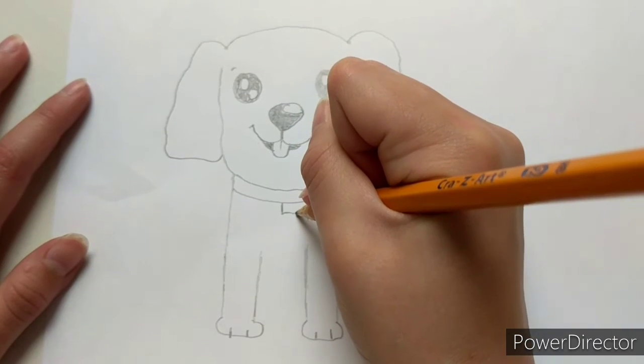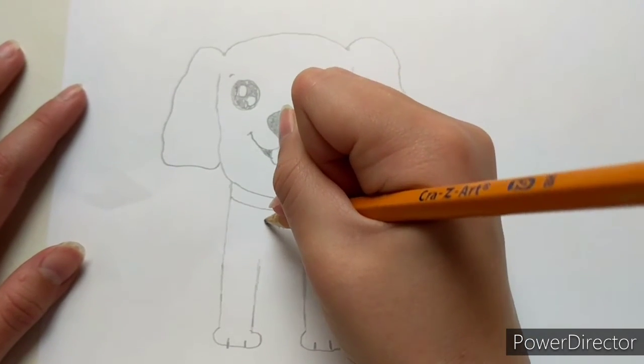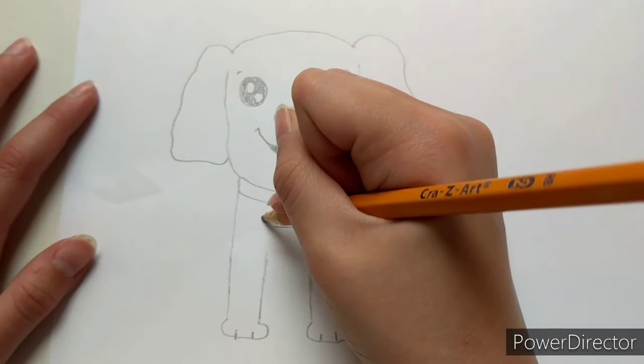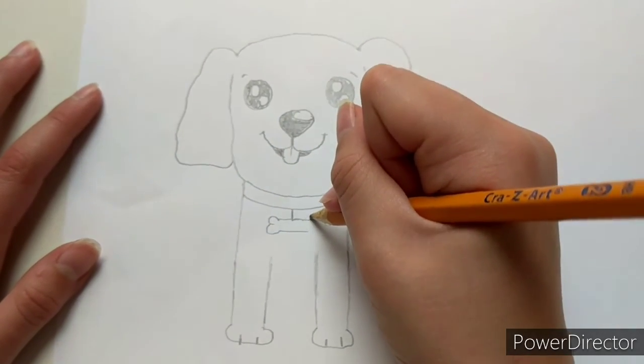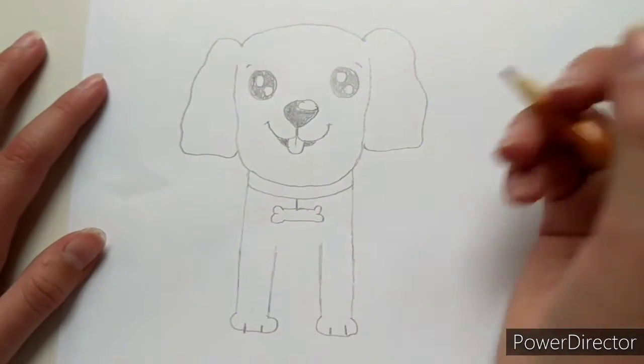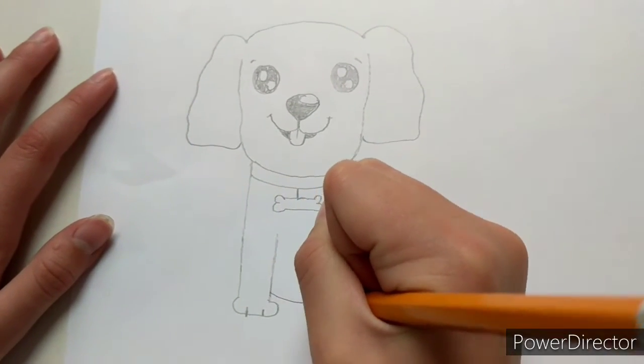Then we are going to be making a bone. So make a line like this on the top and on the bottom. Then make like a heart on each side. Then come back down.